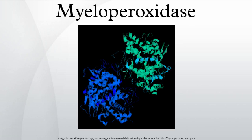Three isoforms have been identified, differing only in the size of the heavy chains. MPO contains a calcium binding site with seven ligands, forming a pentagonal pyramid conformation. One of the ligands is the carbonyl group of ASP-96. Calcium binding is important for the structure of the active site because of ASP-96's close proximity to the catalytic CYS-95 side chain.